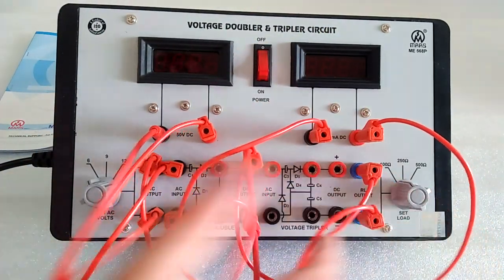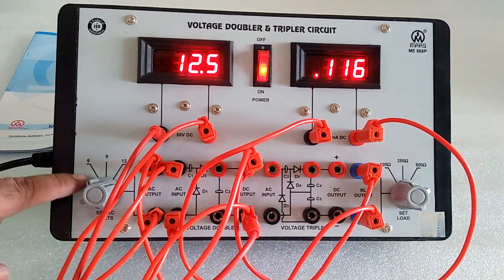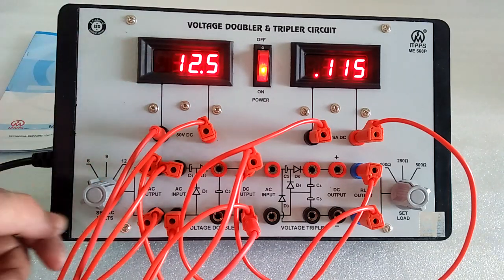Select the 100 ohm load and switch on the instrument. Here you can see we choose 6 volts, and the voltage is doubled to around 12 volts.